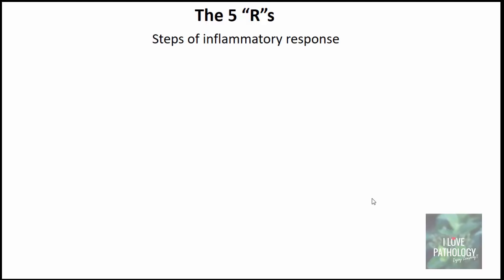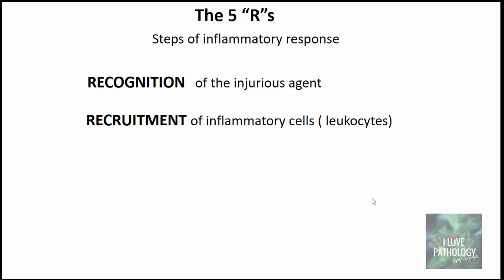The five R's of inflammatory response describe the steps involved. The first R is recognition — the injurious agent must be recognized by the tissue. The second R is recruitment — once recognized, inflammatory cells are recruited: neutrophils in acute inflammation, and lymphocytes or monocytes/macrophages in chronic inflammation. The third R is removal of the injurious agent.